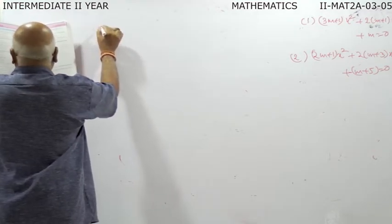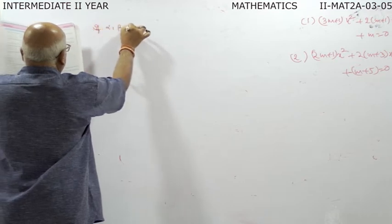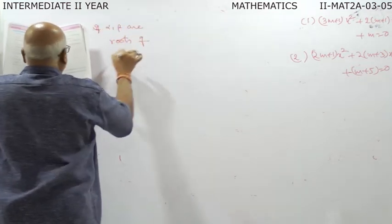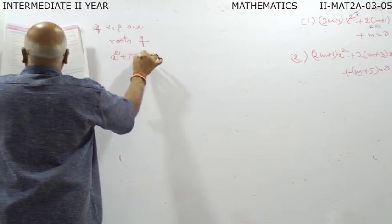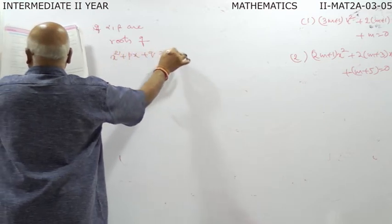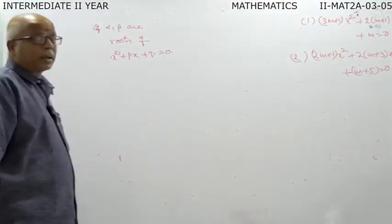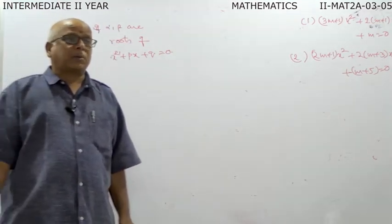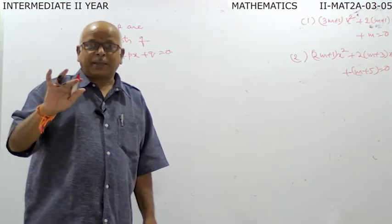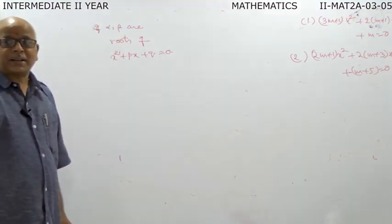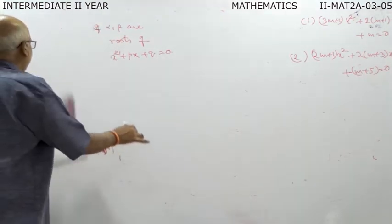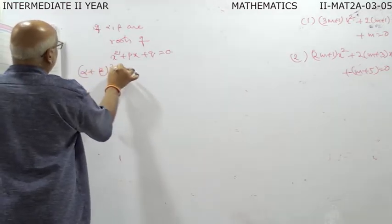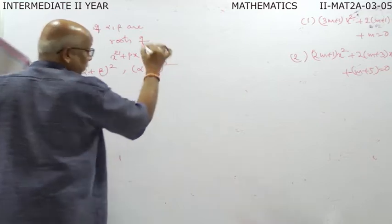New problem: If alpha and beta are roots of x-squared plus px plus q equal to zero, then form a quadratic equation whose roots are alpha plus beta whole square and alpha minus beta whole square.